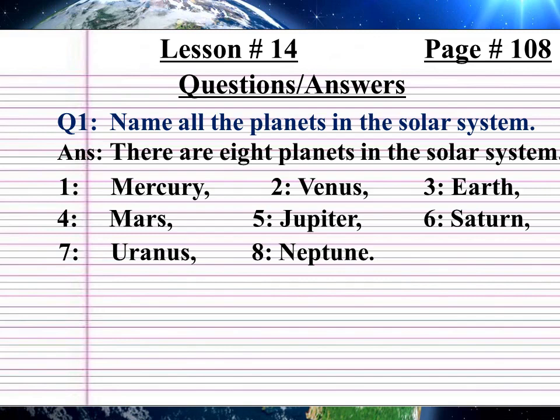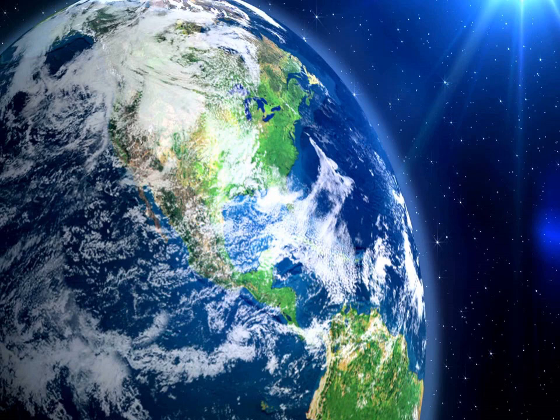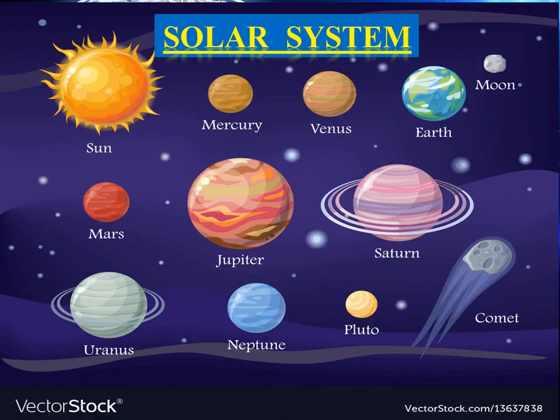Question number 1: Name all the planets in the solar system. Answer: There are eight planets in the solar system — Mercury, Venus, Earth, Mars, Jupiter, Saturn, Uranus, Neptune. (Urdu: Nizam-e-Shamsi mein maujood saare sitaron ke naam — Nizam-e-Shamsi mein 8 sitaare mojud hain: Mercury, Venus, Earth, Mars, Jupiter, Saturn, Uranus, Neptune.) Look at the picture: Solar System.